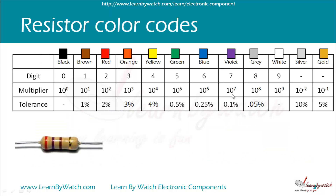Let us see this resistor. It is a 4-band code. So the first one is a digit — if you see it is a digit, you just write its value. The value of red is 2, so you write 2 here. Then the second band is also a digit — you can see it is violet color, so you write 7.